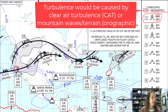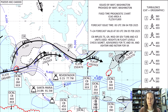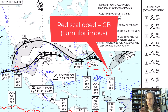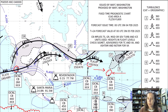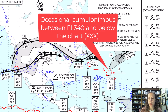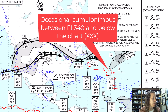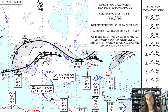Cumulonimbus activity is shown in these red bubbled areas. For example, there's an area off the Atlantic coast — pretty far out in the Atlantic — showing occasional cumulonimbus from somewhere below the chart up to flight level 340. That symbology is essentially the same as the old version of the chart.